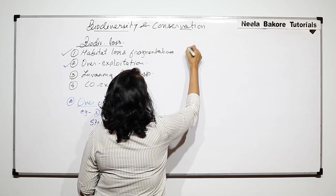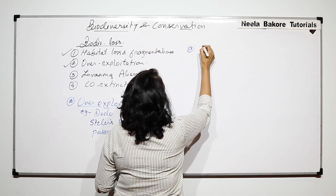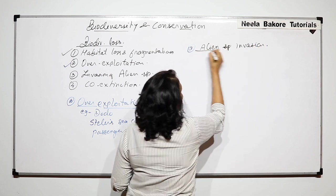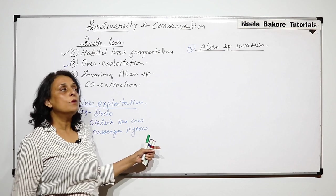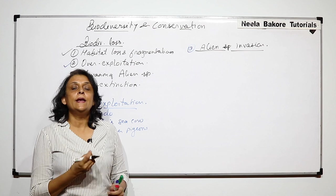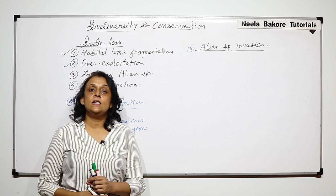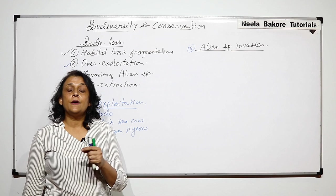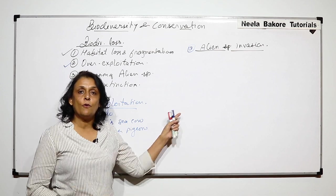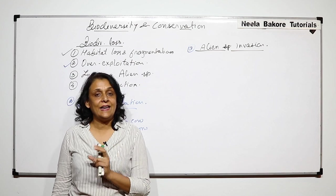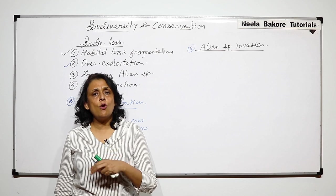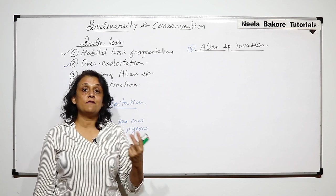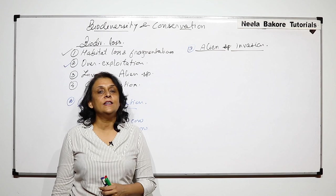The third is invasion of alien species. There are some important examples which will help us understand what happens when an alien species invades. Alien species means it is not the indigenous one. If a foreign species is introduced in a particular area, the species which remains there slowly gets extinct. The alien species grows and reproduces at a faster rate.